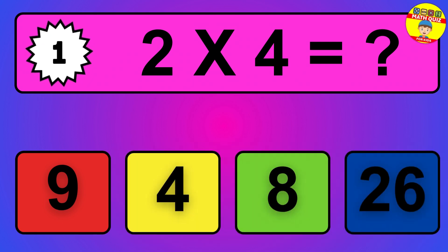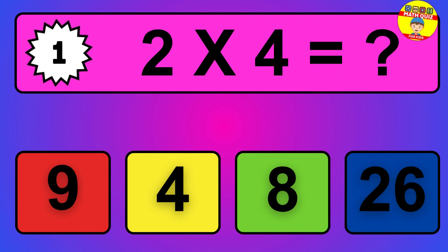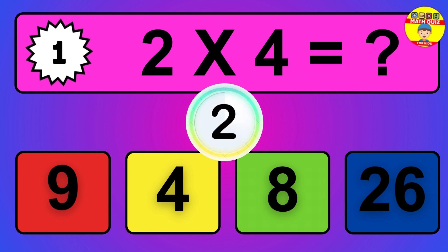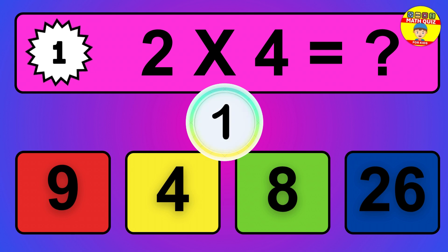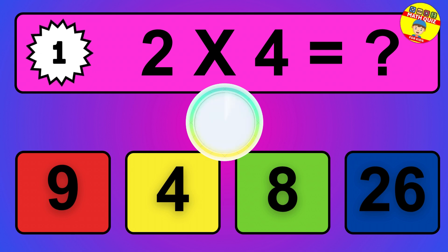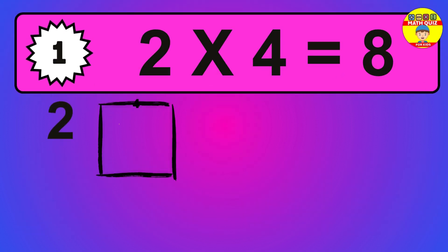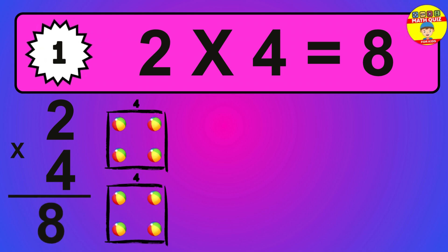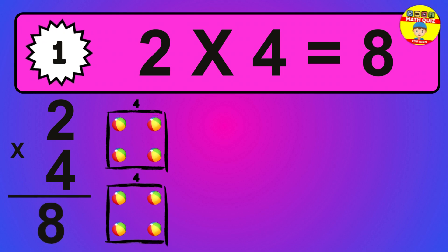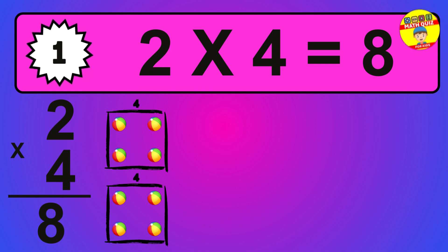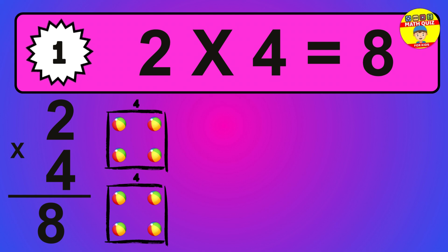Question 1. 2 times 4 equals what? So the answer is 2 times 4 is 8. To calculate, we have 2 groups with 4 balls each one. So how many balls do we have? 8 balls.